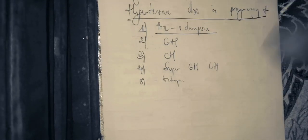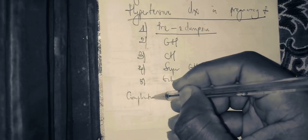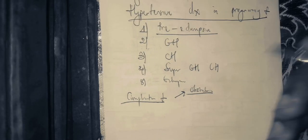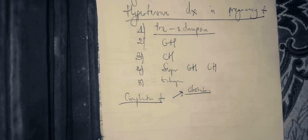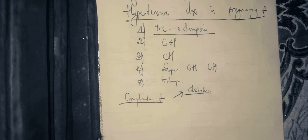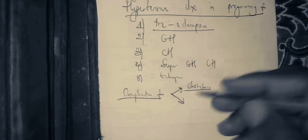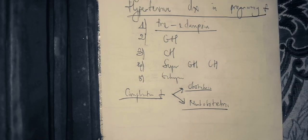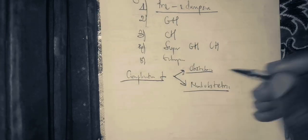After putting your differentials, you speak about the complications of hypertensive disorders in pregnancy. The obstetric complications include HELLP syndrome, eclampsia, postpartum hemorrhage, placental abruption, and fetal complications such as acute fetal distress, intrauterine growth restriction, and intrauterine fetal death. You also discuss non-obstetric complications, covering the mechanism by which hypertension and proteinuria lead to those complications.